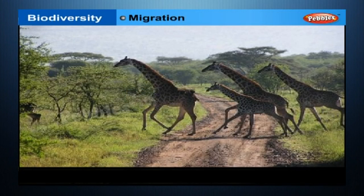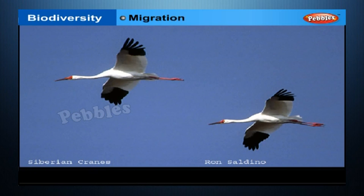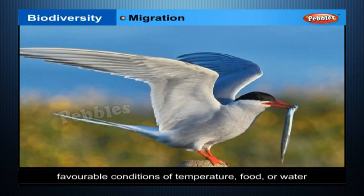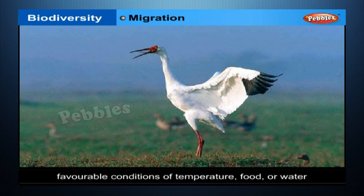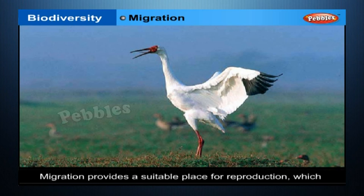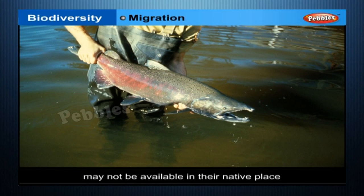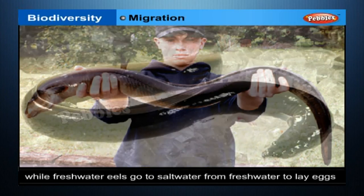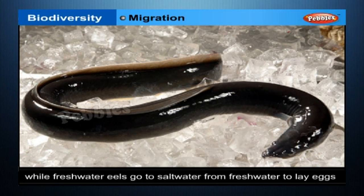Movement of animals in large numbers from one place to another to overcome unfavourable conditions is called migration. Migration often provides the migrating species with more favourable conditions of temperature, food or water. For instance, beasts of cold and temperate regions are known to migrate to warmer areas during winter. Migration also provides a suitable place for reproduction. For example, the salmon migrates from salt water to fresh water to lay eggs and comes back, while freshwater eels go to salt water from freshwater to lay eggs.